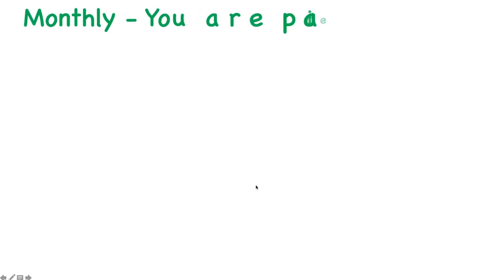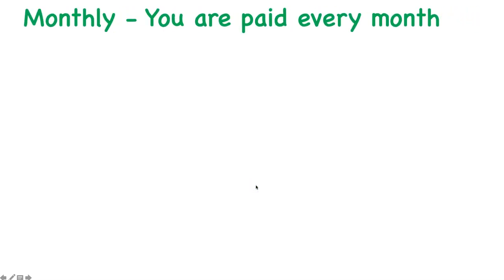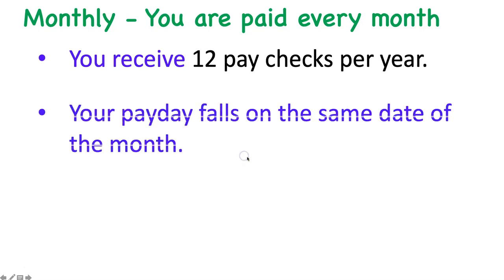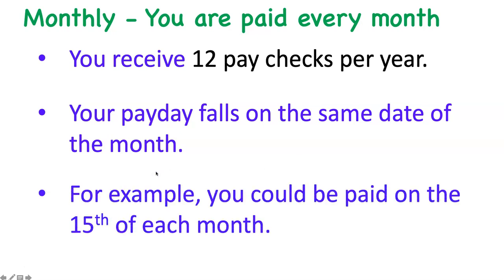Another type of pay period is monthly. This is not as common, but you simply receive 12 paychecks per year, which makes sense because there are 12 months in a year. Your payday falls on the same date each month — for example, you could be paid on the 15th of each month. Now let's do some problems using this vocabulary.